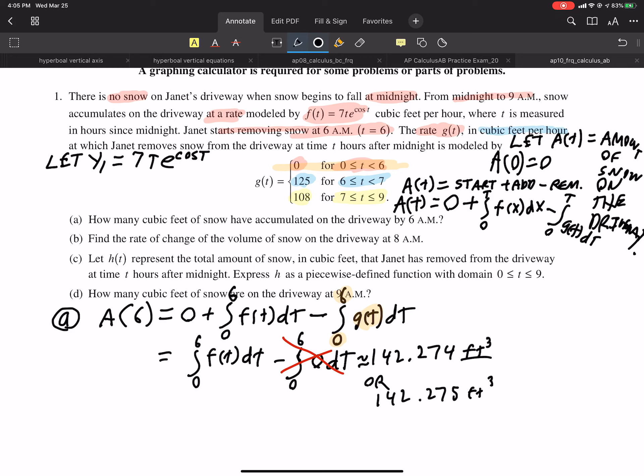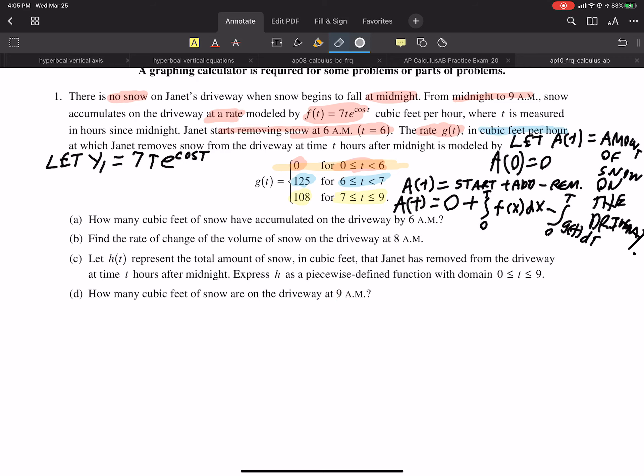Part B, find the rate of change of the volume of snow. So let me erase all of this stuff. And I want to highlight something. The rate of change, when you see that, in your brain, hopefully you see derivative. That is, find the derivative. Of the volume of snow on the driveway at 8 a.m. So, what's the amount of snow? We have the formula for the amount of snow, but we want the derivative of that. So we want A prime of T. This is part B.